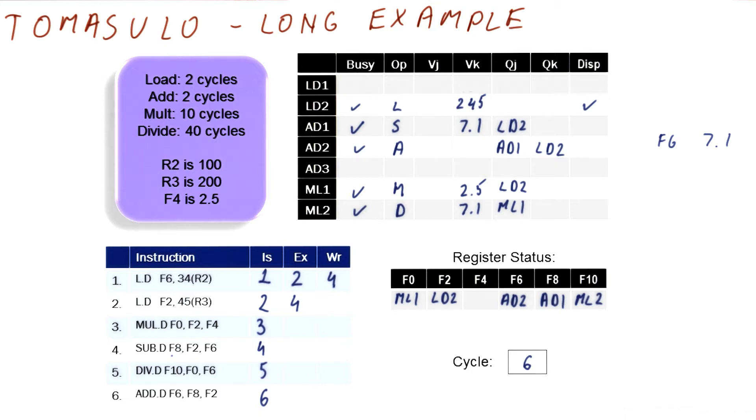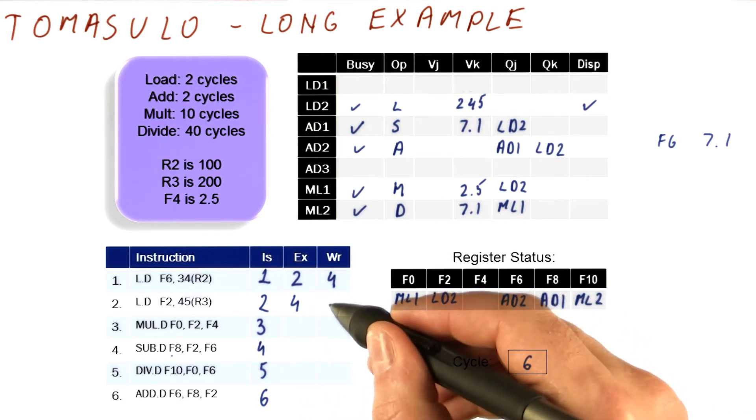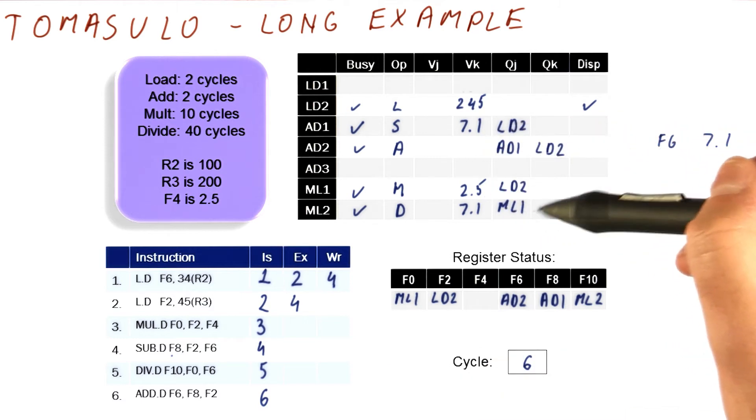Now let's look at whether we can dispatch something. Well, in cycle five, this instruction is still executing. So in cycle six, it's going to write the result. But until that writes the result, nothing is ready really to execute.